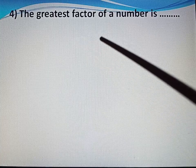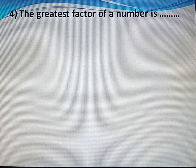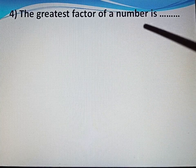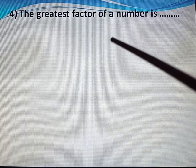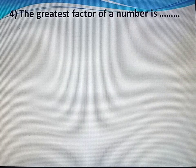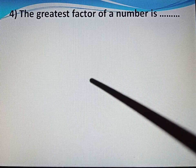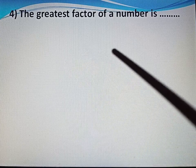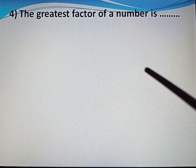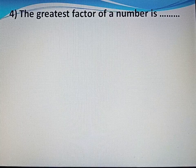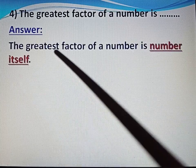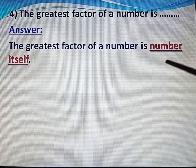Now come to question number 4. The greatest factor of a number is dash. The greatest factor of any number is that number itself. For example, the factors of 4 are 1, 2 and 4, and the greatest among them is 4 — that number itself. So the greatest factor of a number is the number itself.